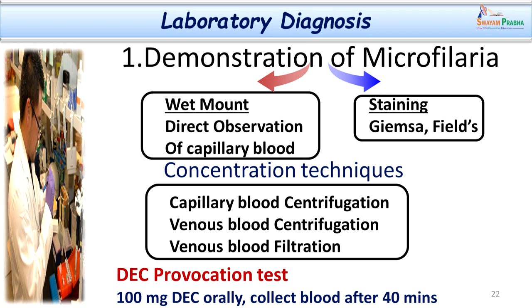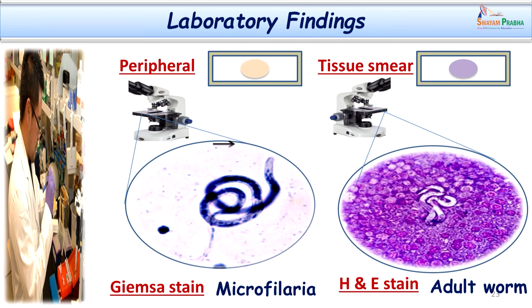Even though it is not night time, the DEC drug provocates the female adult worm to release microfilaria into circulation, enabling us to demonstrate them under the microscope. On the peripheral smear, as we already saw in our two cases, microfilaria are demonstrated. The tip of the microfilaria is very helpful in differentiating between species: Wuchereria bancrofti has nuclei stopping a little away from the tail tip, and importantly, the microfilaria of Wuchereria bancrofti are sheathed parasites. We can see the sheath clearly.